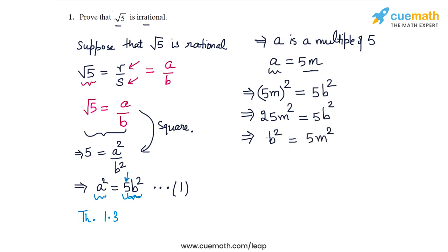Now, this relation again means that b square is a multiple of 5 because on the RHS, on the right hand side, we have this factor of 5. So b square is a multiple of 5. And again using theorem 1.3, we can conclude that b itself must also be a multiple of 5.